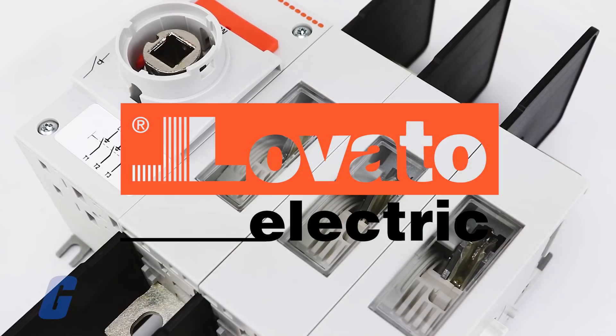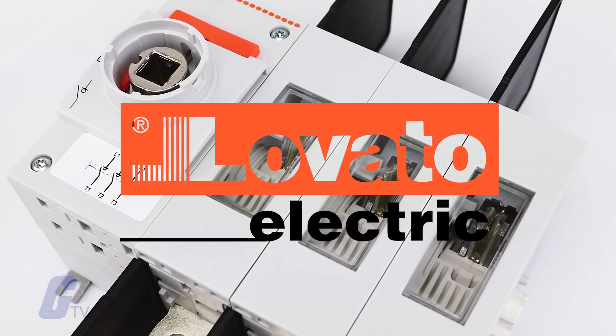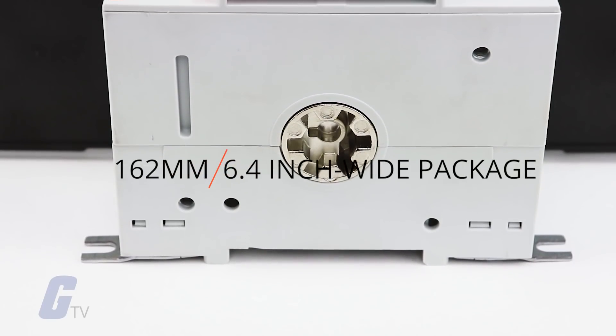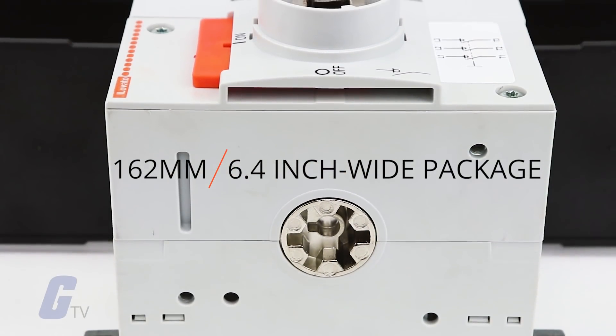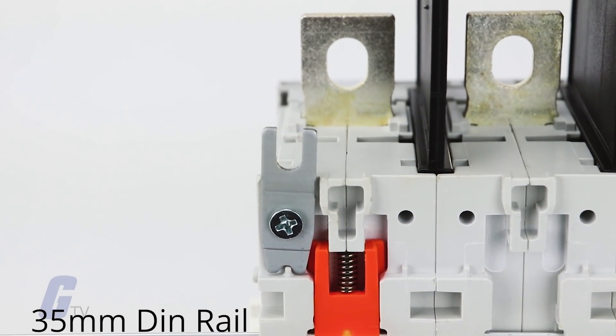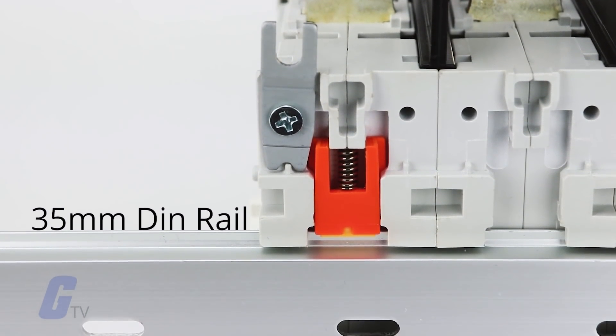Lovato's GL Series UL98 non-fused disconnect switches are available for 200 amps in a compact 162 millimeter, 6.4 inch wide package that can be easily mounted directly on the 35 millimeter DIN rail.